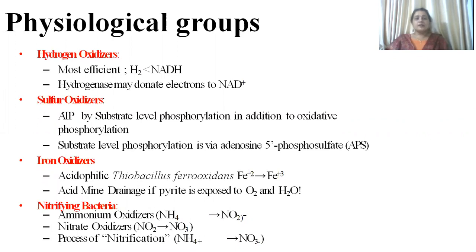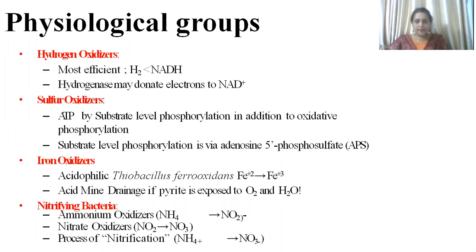Iron oxidizers are utilized in mining processes. Nitrifying bacteria are two different species involved in chemolithotrophy: Nitrobacter species and Nitrosomonas species.